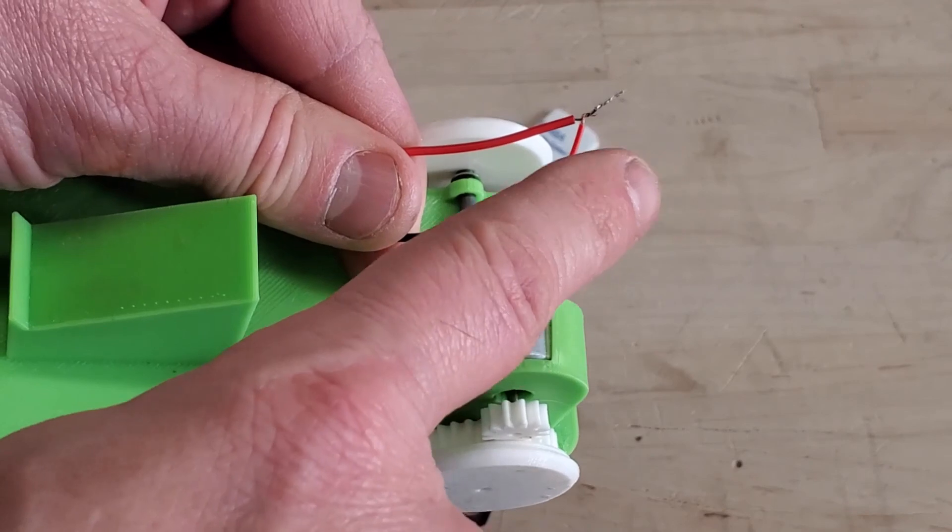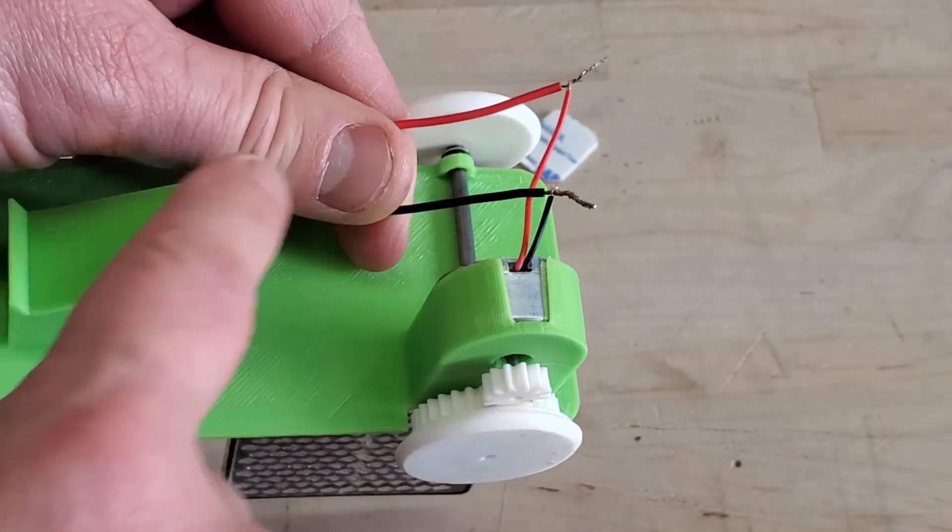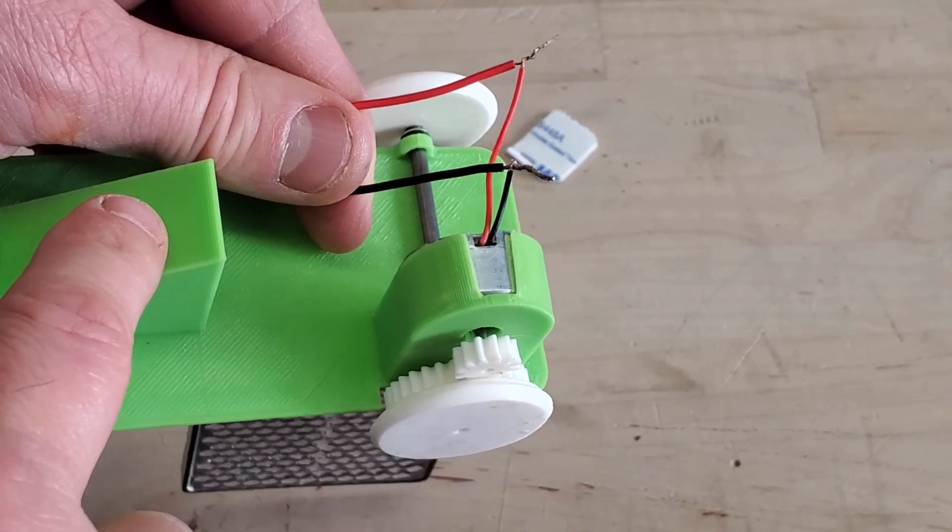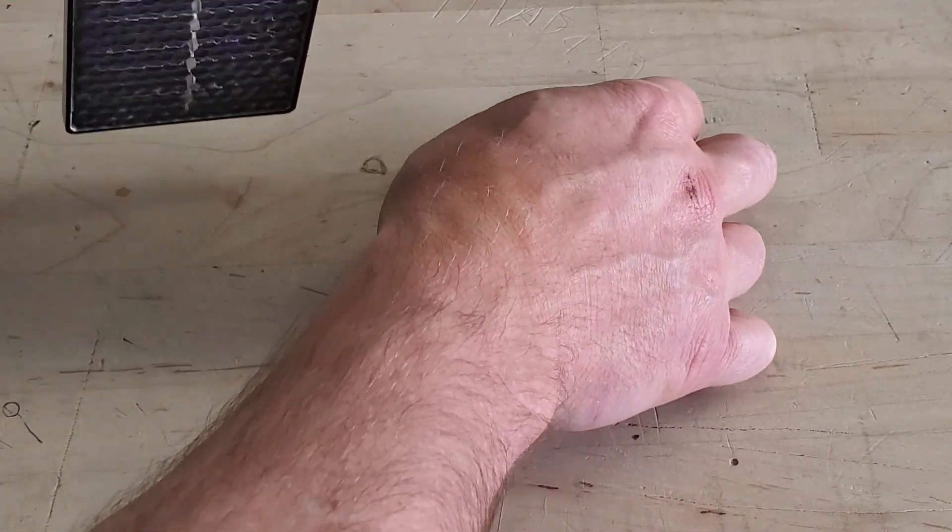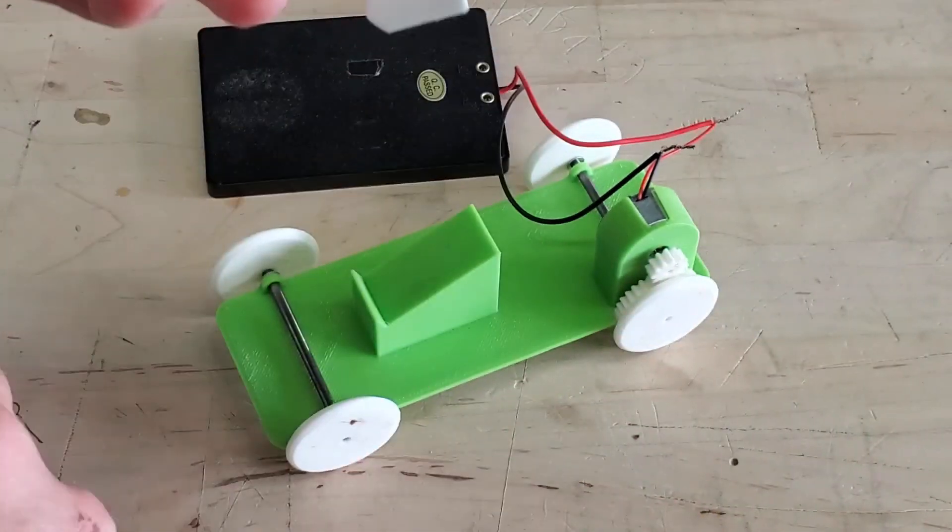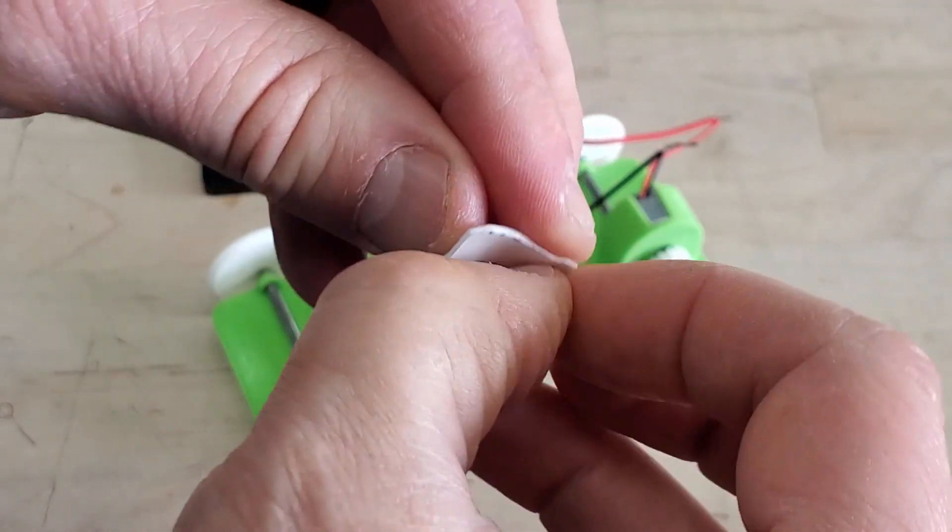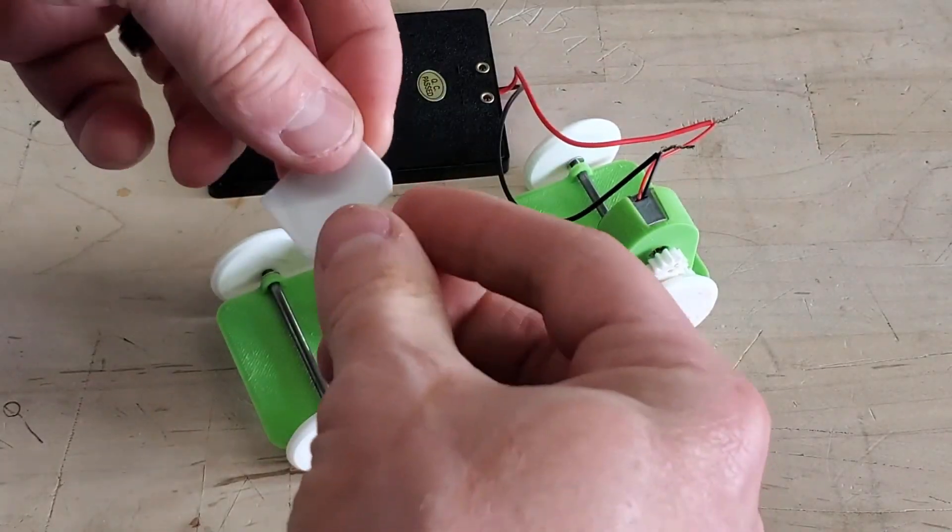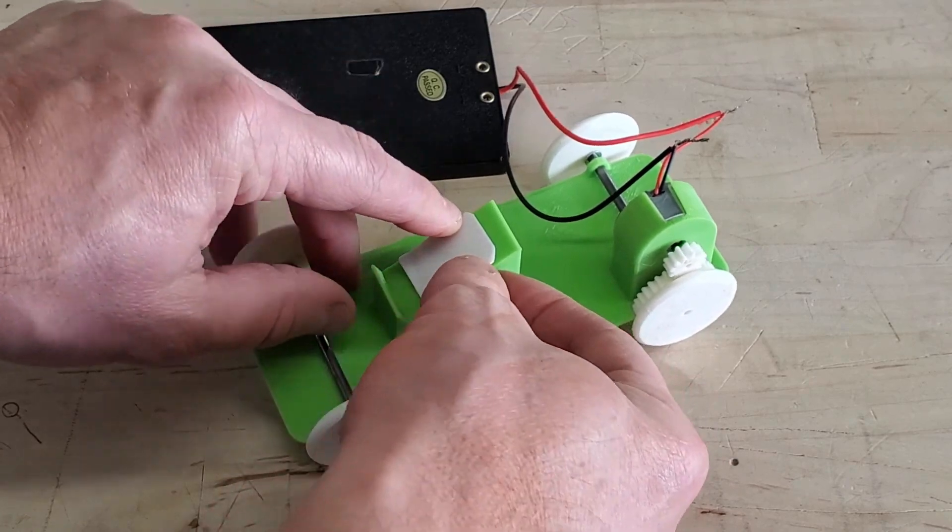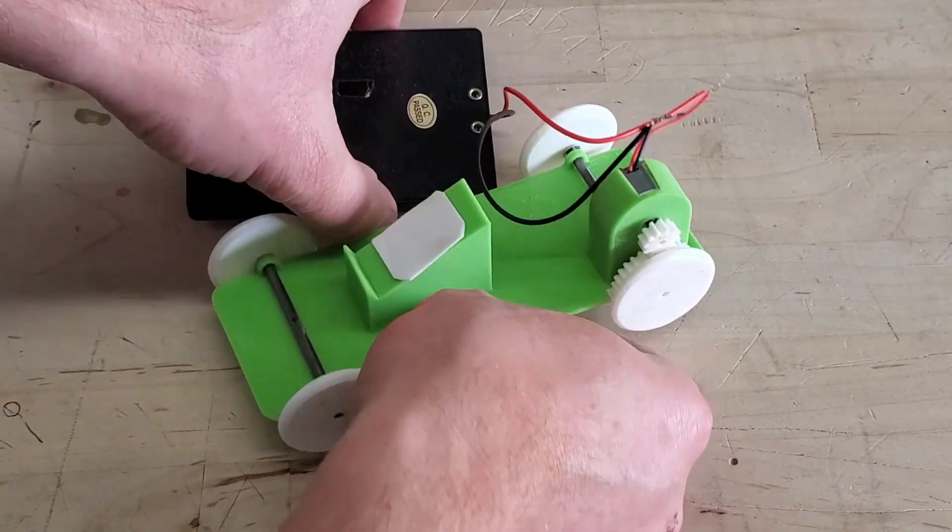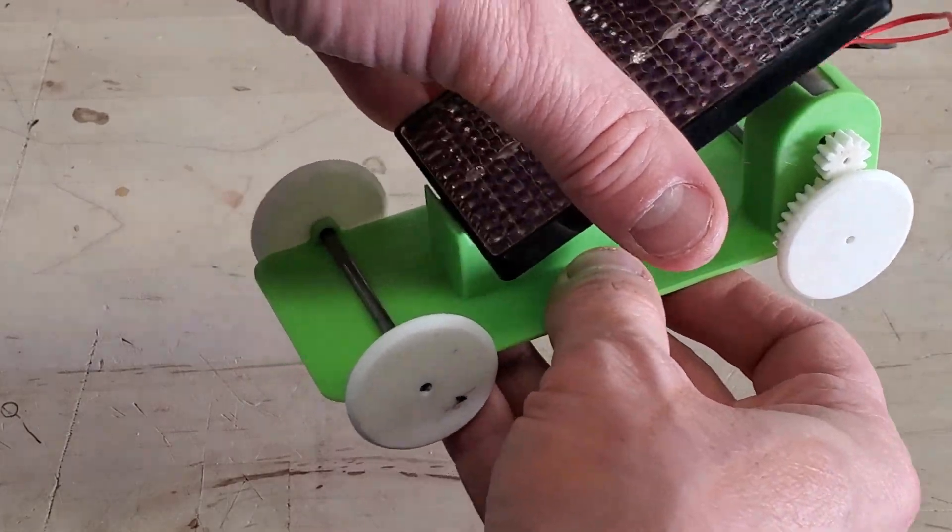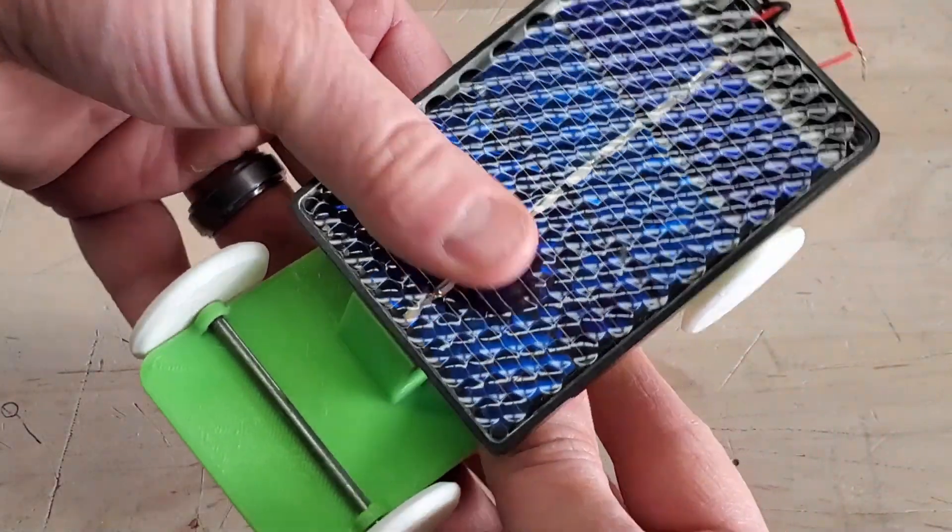Once you have both wires twisted together properly, let's mount our solar panel on our solar car chassis. Grab your double-sided tape, unpeel it, and stick it right here on the mounting portion. Grab your solar panel, center it correctly, and firmly press it onto your double-sided tape.